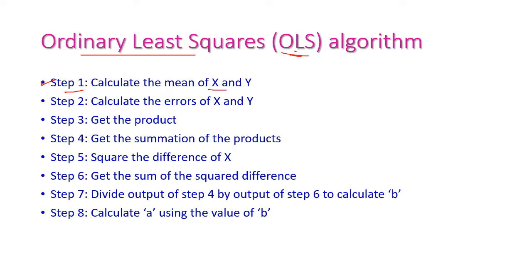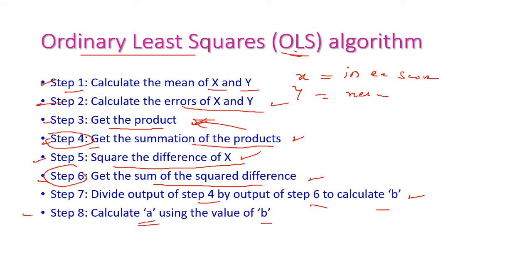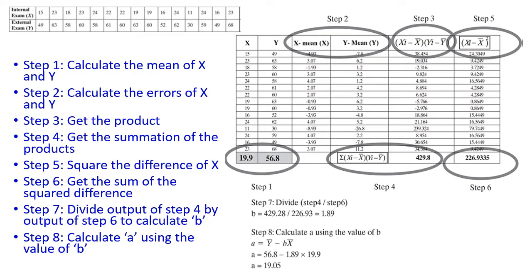Let us apply the OLS algorithm to solve this problem. Step 1: calculate the mean of x and y. Step 2: calculate the errors of x and y. Step 3: get the product. Step 4: get the summation of the products. Step 5: square the difference of x. Step 6: get the sum of squared differences. Then divide the output of step 4 by step 6 to calculate b, and finally calculate a using b.